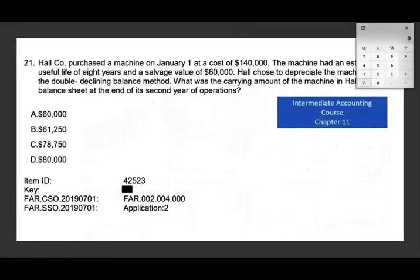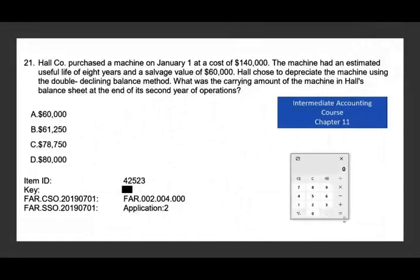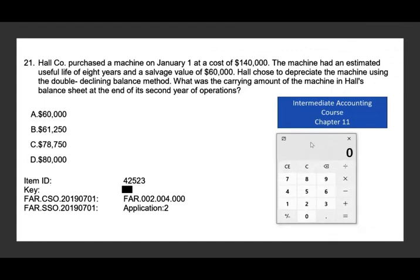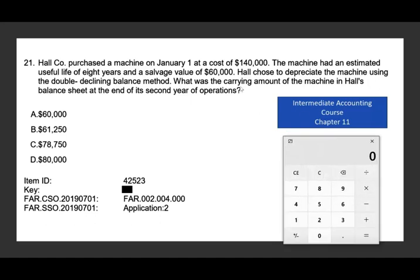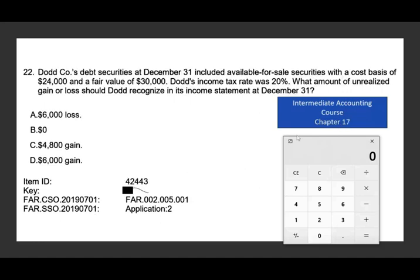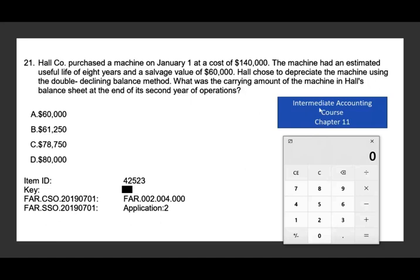Let's take a look at the first question. For every question, I'm going to tell you where you can find the related topic on my YouTube or on my website for additional information. For example, this question is from my intermediate accounting course, chapter 11, so chapter 11 will cover this topic. The next session will be chapter 17, and so on. If you need to go and learn about the topic, this is where you would go on my website.